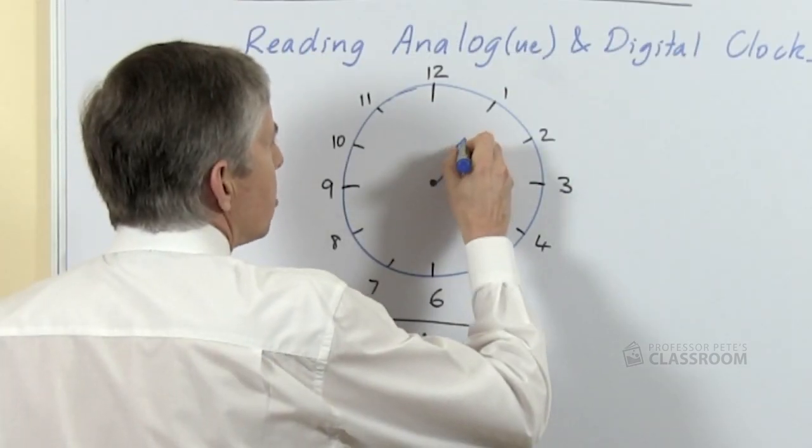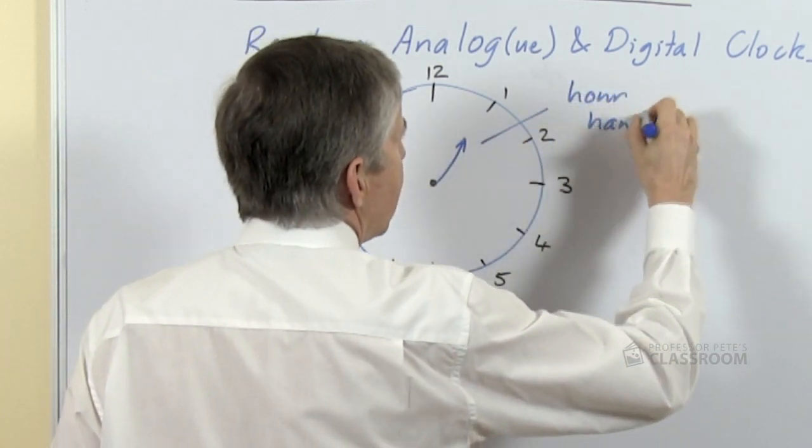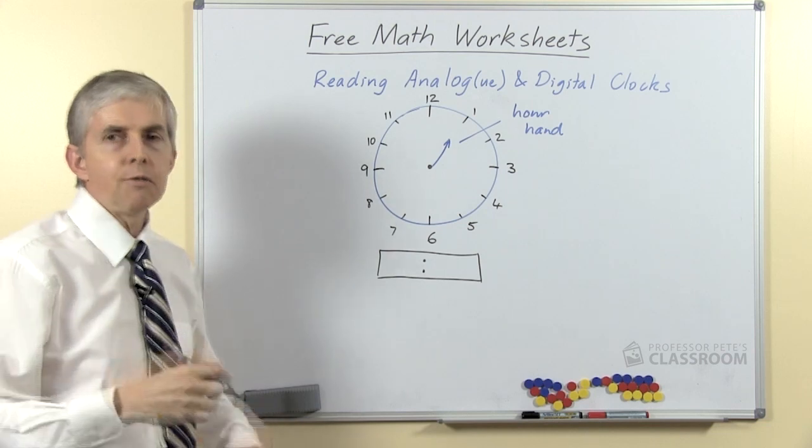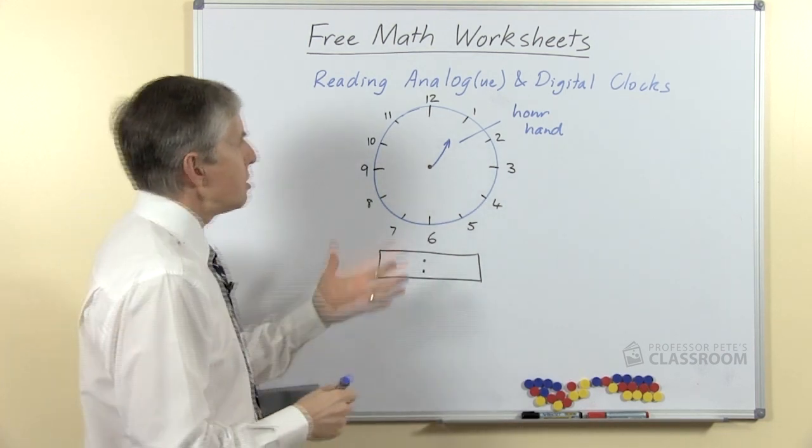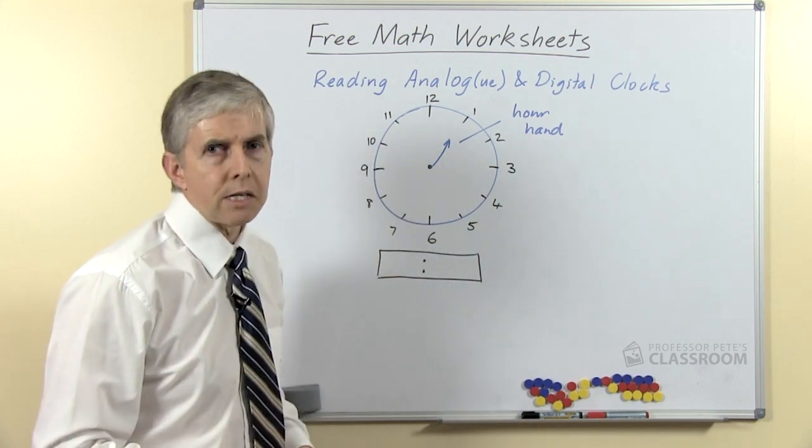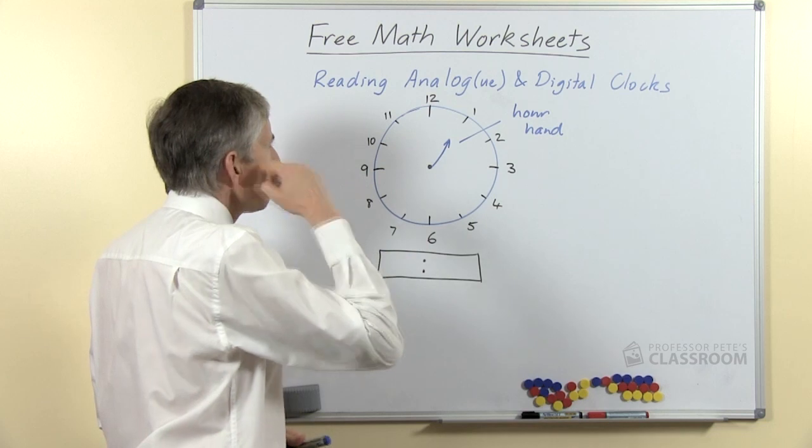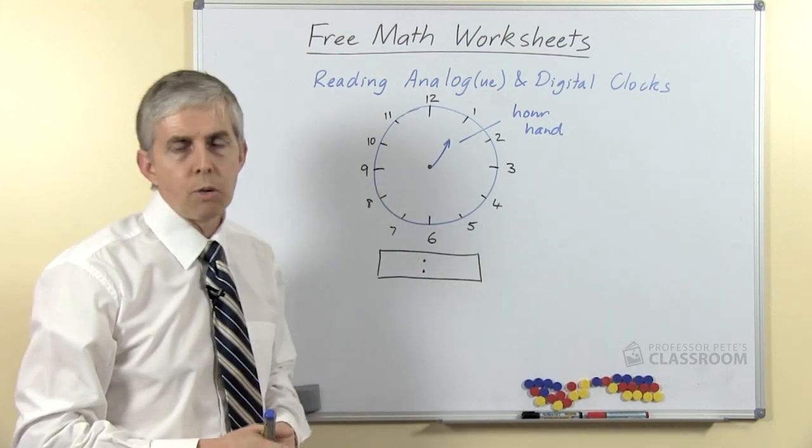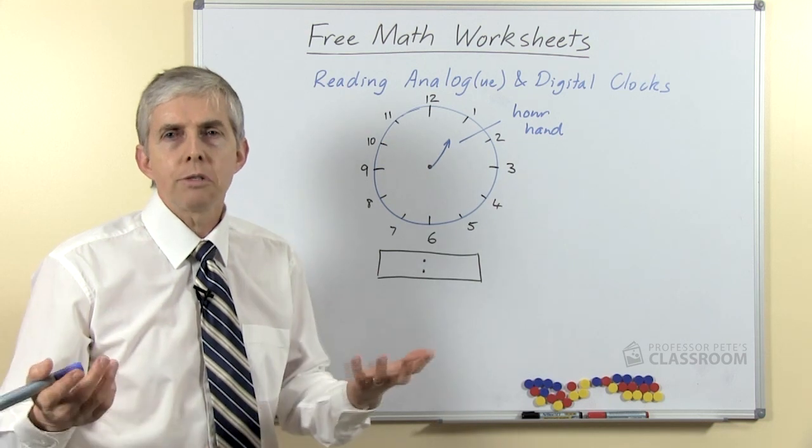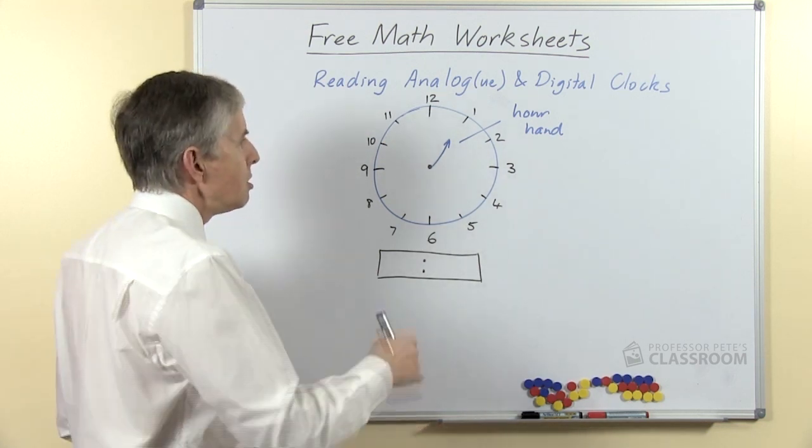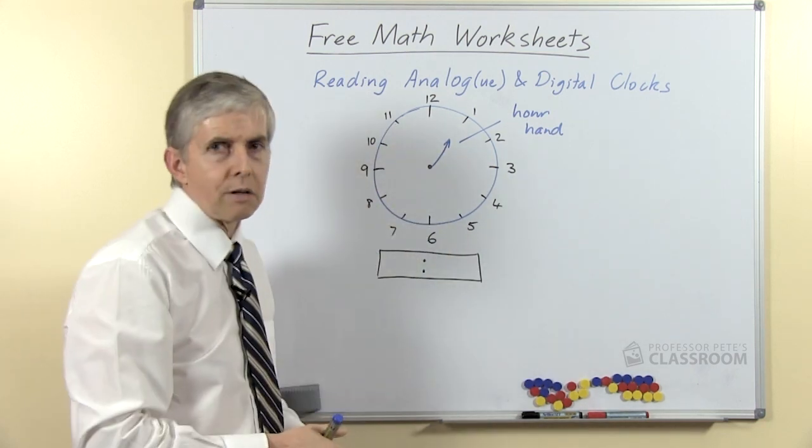There is what we often call the short hand, or more accurately should be called the hour hand, measuring the passage of the hours during a day. So we could say to our students in an early lesson, how many hours are there marked off on the clock? The numbers go up to 12, and that is the 12 hours. How many hours are in the day? Of course there are 24, so we can deduce from that that the hour hand goes around the clock twice during the day.